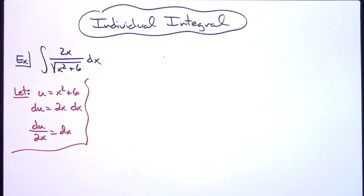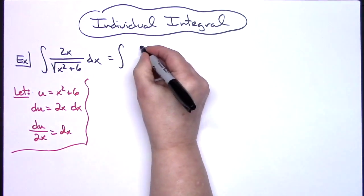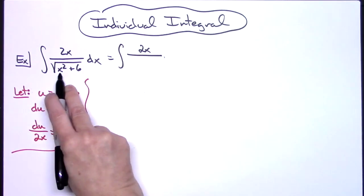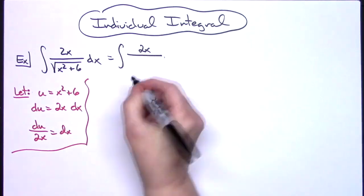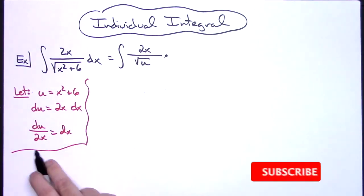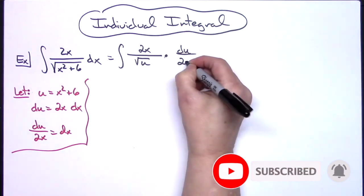At that point, I'm going to come back to the original integral and start making some substitutions. We'll keep that 2x in the numerator. We'll replace what's underneath the square root with u, so square root of u. We'll replace the dx with what it equals: du over 2x.